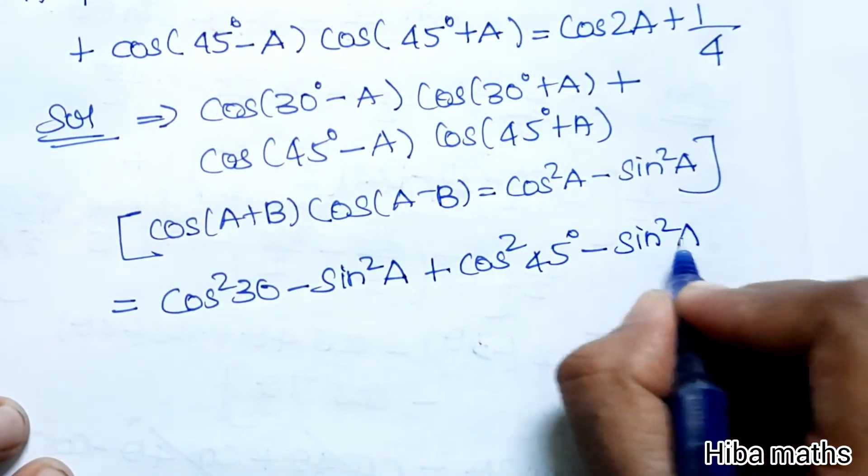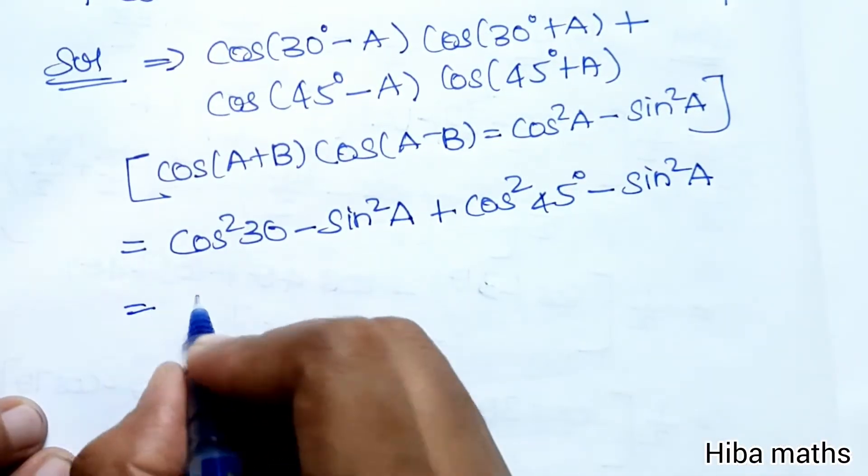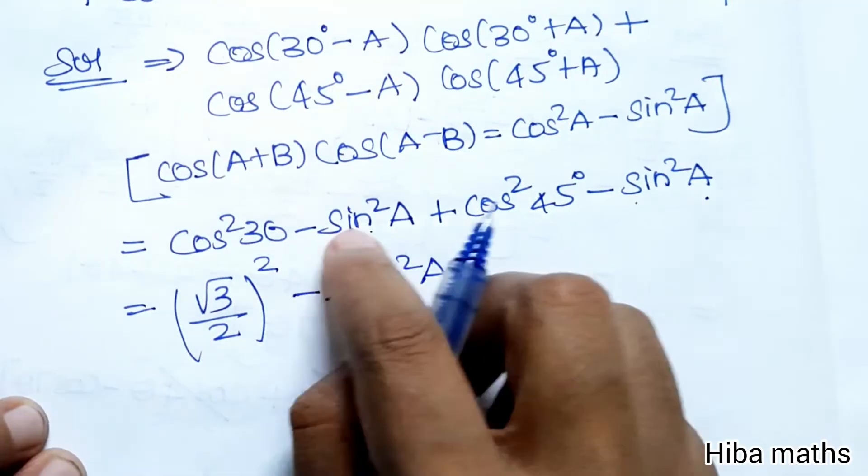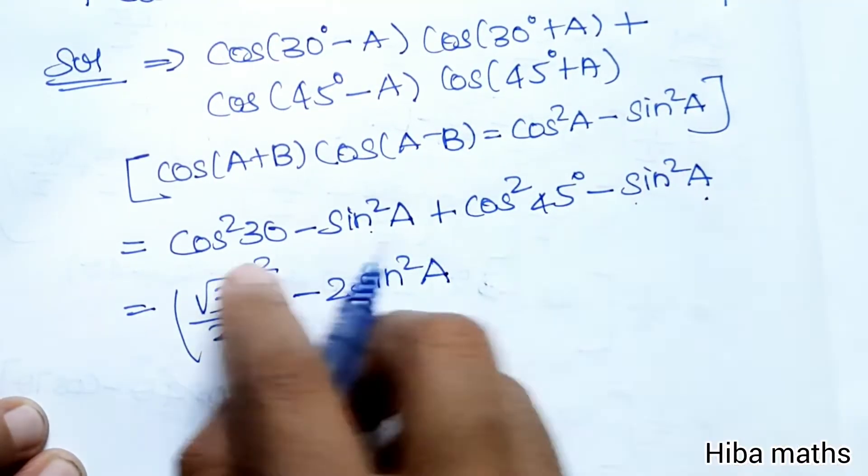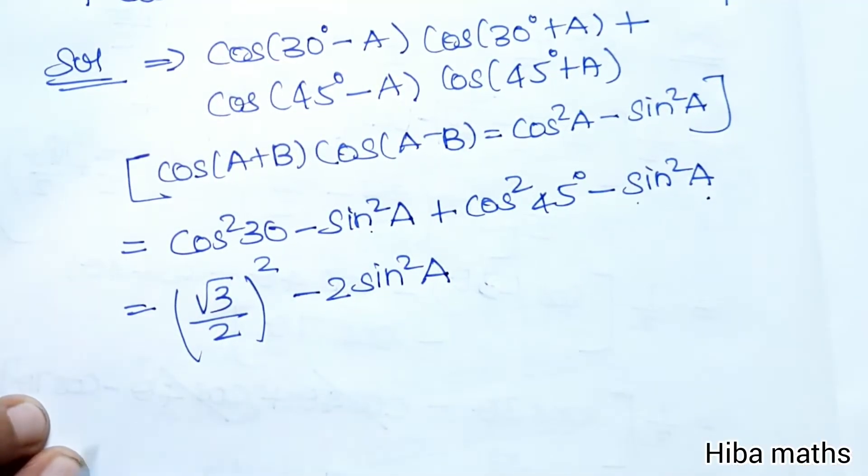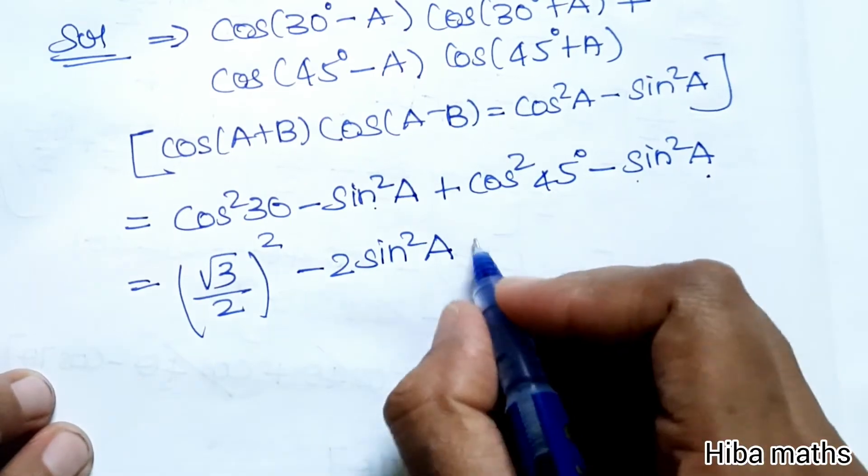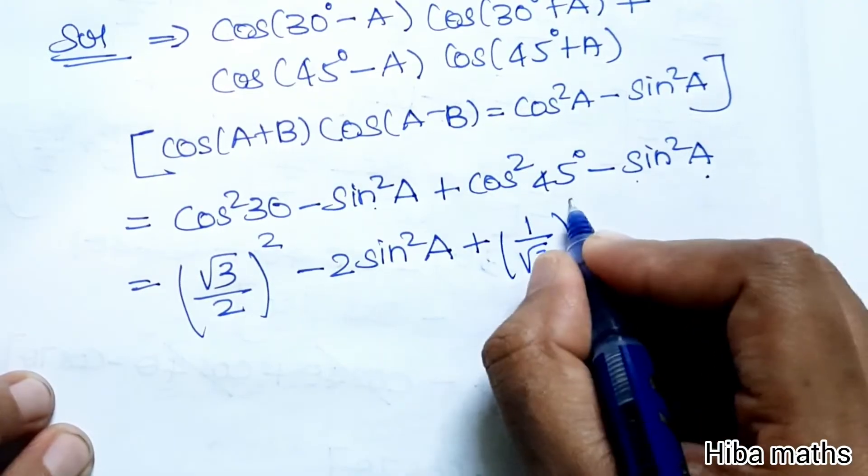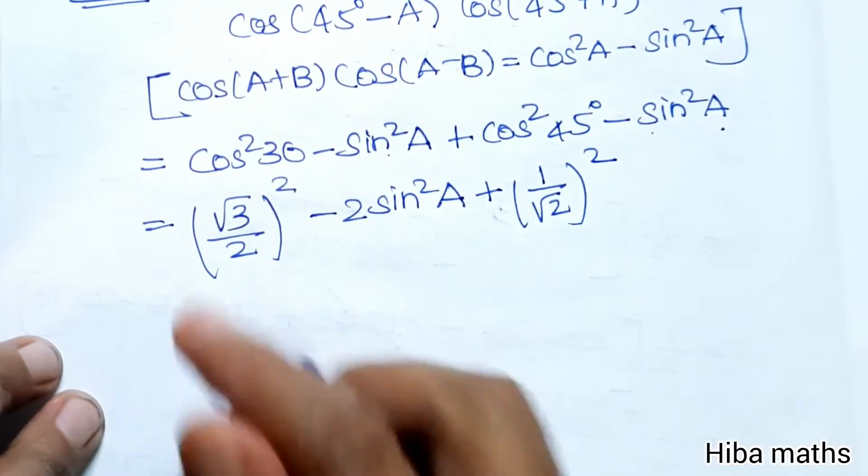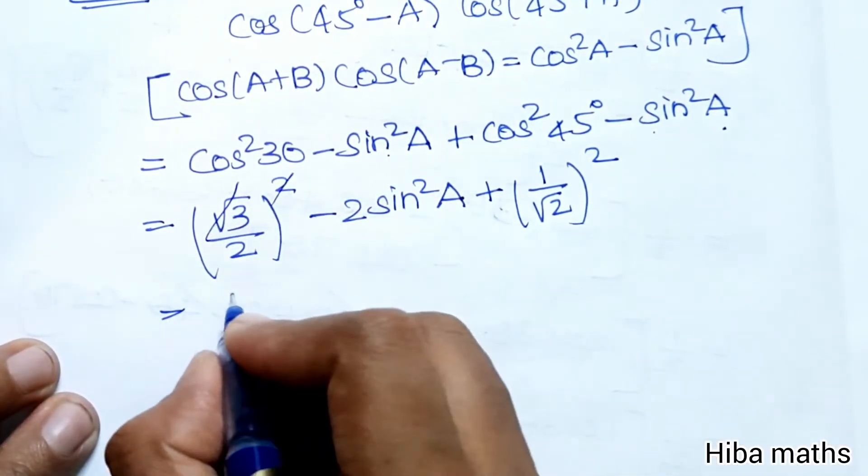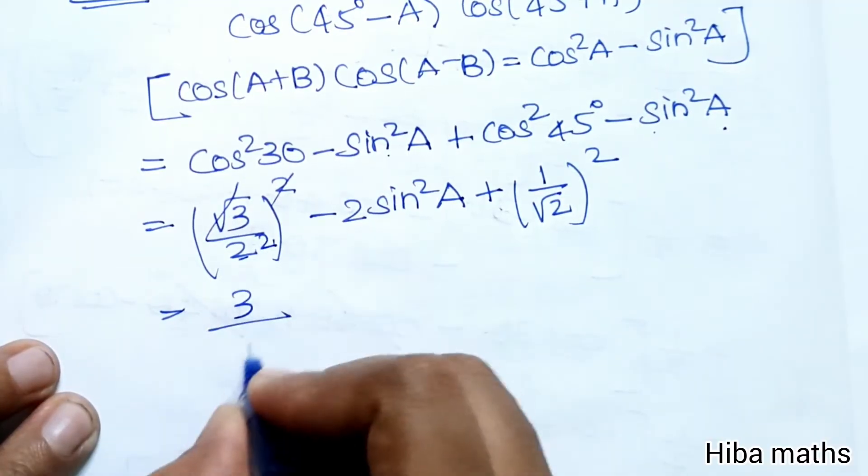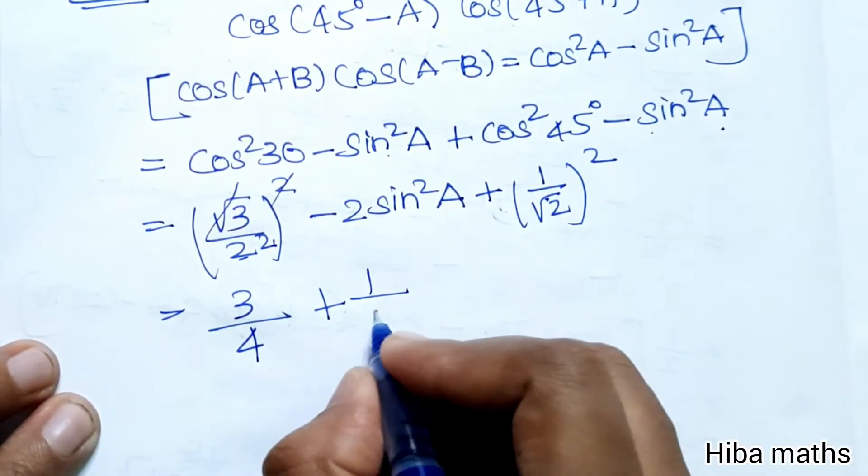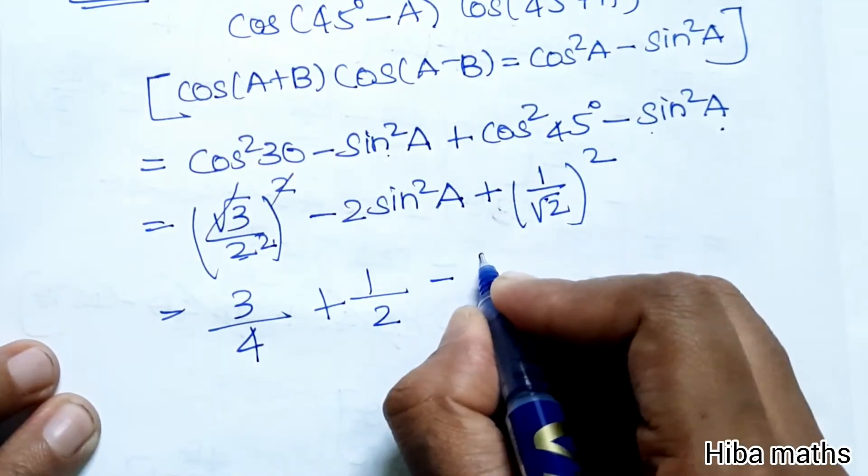Cos 30 value is √3/2, so (√3/2)² - sin²A. And cos 45 value is 1/√2, so (1/√2)² - sin²A. This equals 3/4 - sin²A + 1/2 - sin²A, which simplifies to 3/4 + 1/2 - 2sin²A.